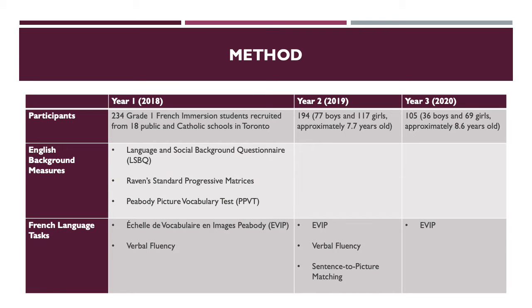This table lists the tasks administered and analyzed. Although there were initially 234 students recruited, my research is based on the main sample which remained through to year two. This included 194 French immersion students from schools across Toronto. The LSBQ filled out by their parents helped to categorize them as either middle SES or high SES and monolingual or bilingual. The Raven's matrices demonstrated that all students started off the same in their background intelligence, while the PPVT for English vocabulary showed initial deficits for middle SES and bilingual children.